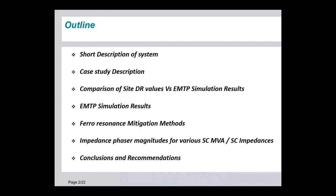Whatever the case occurred during the site condition was rebuilt and re-simulated in EMTP. We compared both results, followed by the EMTP simulation results in the form of waveforms and tabulated values, followed by the ferroresonance mitigation methods pertaining to this case study, followed by an academic study of how short circuit MVA is affecting ferroresonance frequency. We conducted this using the frequency scan tool available in EMTP, which slightly varies the short-circuit MVA of the source to find out how the ferroresonance frequency varies. Finally, conclusions and recommendations to avoid ferroresonance phenomena.